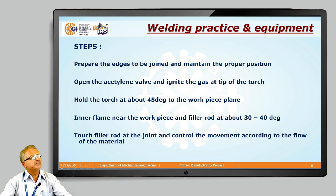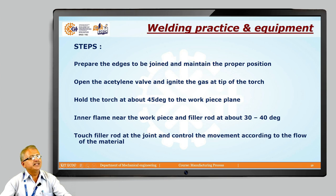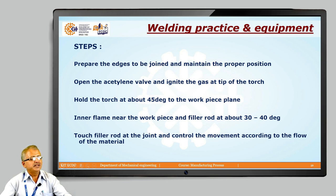Edge preparation is very important because it determines the strength of the weld. Open the acetylene valve and ignite the gas at the tip of the torch. Hold the torch at 45 degrees to the workpiece plane with the inner flame near the workpiece, and hold the filler rod at about 30 to 40 degrees. Touch the filler rod at the joint and control the movement according to the flow of material.